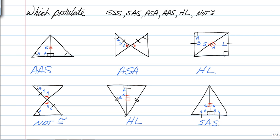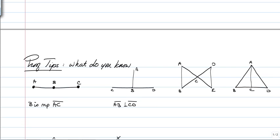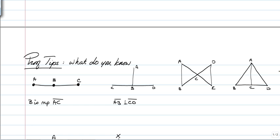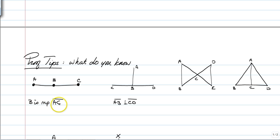Now we move on to some tips about proving triangles congruent. You have to think about what you know based on what's given. For the first example, we have segment AC with B in the middle, and we're told B is the midpoint of AC. We know that AB is congruent to BC because midpoints cut segments in half.